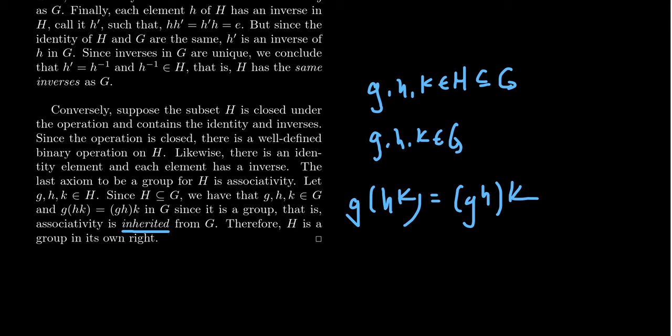It's not just associativity that is inherited. If a property holds for all elements in G, it remains true when restricted to H. This is also true for commutativity — every subgroup of an abelian group is necessarily abelian. However, not every subgroup of a non-abelian group has to be non-abelian, because non-abelian just means commutativity is not guaranteed for all elements — it doesn't mean commutativity never happens. Every group has some elements that commute, like the identity, an element with its inverse, or an element with its powers.